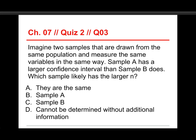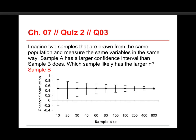Okay, number three, imagine two samples that are drawn from the same population and measure the same variables in the same way. Sample A has a larger confidence interval than sample B does. Which sample likely has the larger N, or sample size? Well, remember, larger sample size means smaller interval, narrower confidence interval. A is bigger, A is wider, B is narrower. The choices are they're the same as sample A, sample B, or cannot be determined. Well, sample B, because it has a narrower confidence interval, and that means a larger sample size.